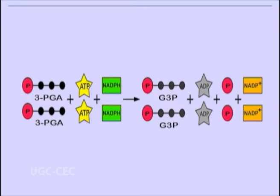The enzyme phosphoglycerate kinase catalyzes the phosphorylation of 3-PGA by ATP, leading to formation of 1,3-bisphosphoglycerate or 1,3-BPGA, or glycerate 1,3-bisphosphate. ATP plus Pi are also formed in the reaction. Note that 2 molecules of 3-PGA are produced for every CO2 that enters the cycle, so this step utilizes 2 ATP per carbon dioxide fixed.